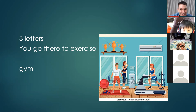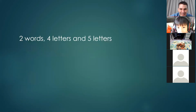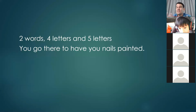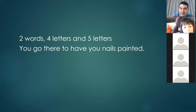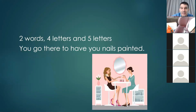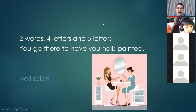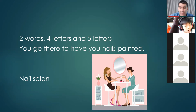The next one is two words — first word is four letters, second word is five letters. You go there to have your nails painted with colors. The four-letter word is 'nail' and the five-letter word is similar to where girls go to get their hair cut — 'salon.' Yes — this is called a nail salon. A hair salon is where you get your hair cut; a nail salon is where you get your nails painted.